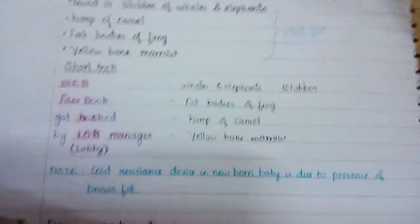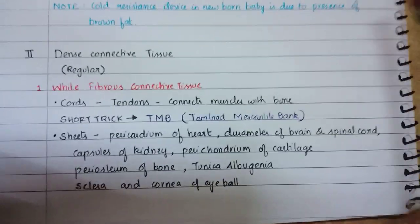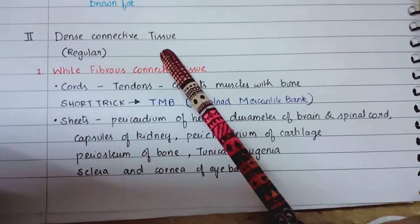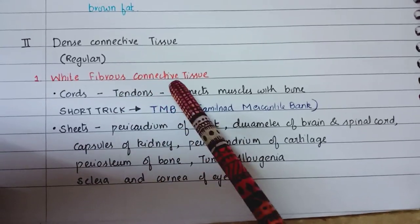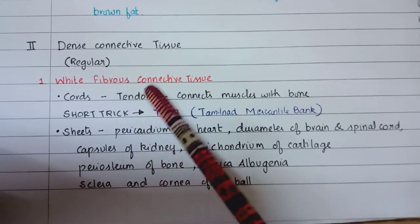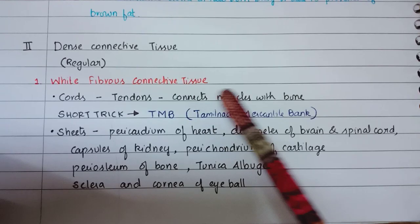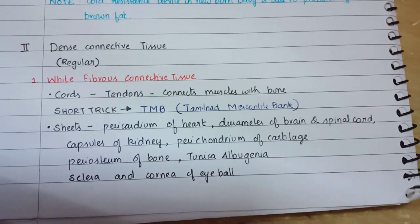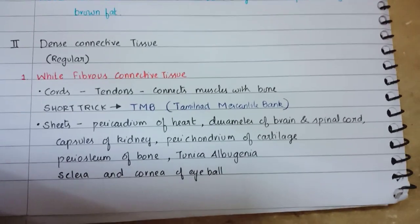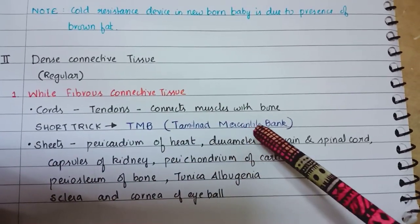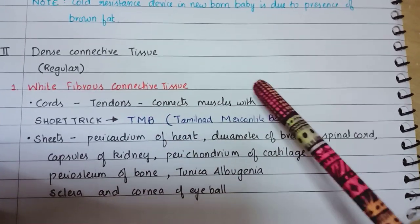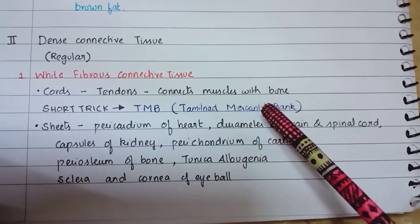Now let's go to dense connective tissue. Dense regular connective tissue consists of white fibrous connective tissue, whose cords are tendons, which connect muscles with bone. The short trick is TMB - Tamil Nadu Mercantile Bank - which stands for Tendon, Muscle, Bone.